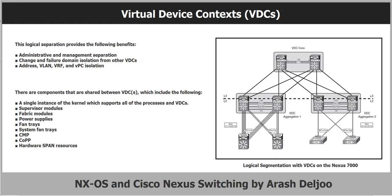This enables VDCs to be administered by different administrators while still maintaining rich, granular RBAC capability. With this functionality, each administrator can define virtual routing and forwarding instance, or VRF, names and VLAN IDs independent of those used in other VDCs, safely, with the knowledge that VDCs maintain their own unique software processes, configuration, and data plane forwarding tables.